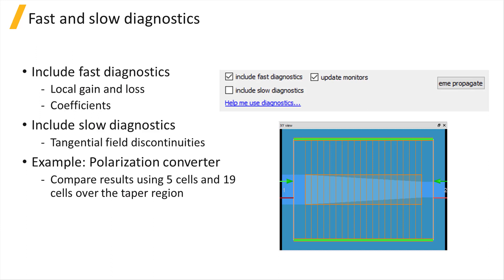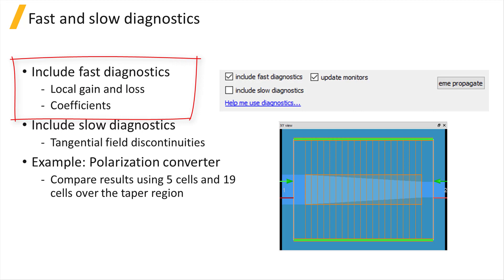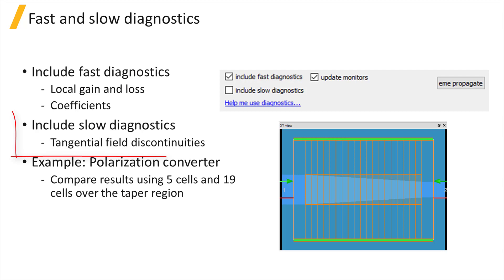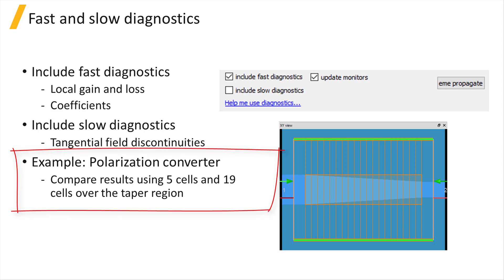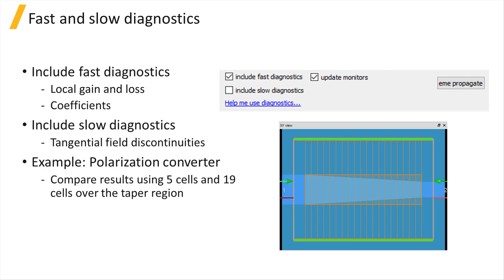As mentioned in the last unit, you can either choose to include fast diagnostics or both fast and slow diagnostics. Including slow diagnostics will cause the propagate step of the simulation to take longer to complete. Fast diagnostics will return the local gain and loss and the forward and backward propagating coefficients, while including slow diagnostics will also return the tangential field discontinuities at each interface. In the next slides, we will consider error diagnostics results for the polarization converter example from the mode convergence sweep unit with 25 modes in each cell.